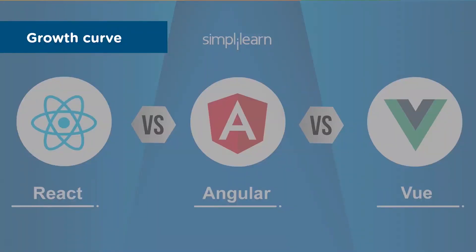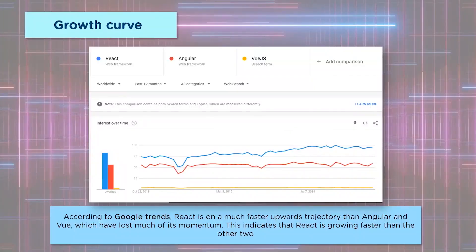Now let's look at the future scope. Learning a new technology always comes with questions like what's in it for me, what's its growth potential, and how far will it take me in my career. According to Google Trends, over the past 12 months React has been on a much faster upward trajectory than Angular and Vue, which have considerably lost their momentum. This indicates that React is growing faster than the other two in terms of popularity, industry adoption, and community support.